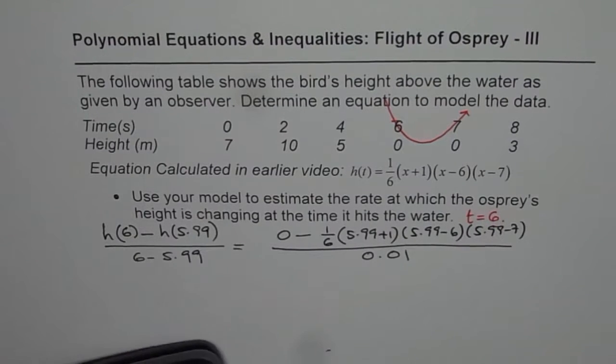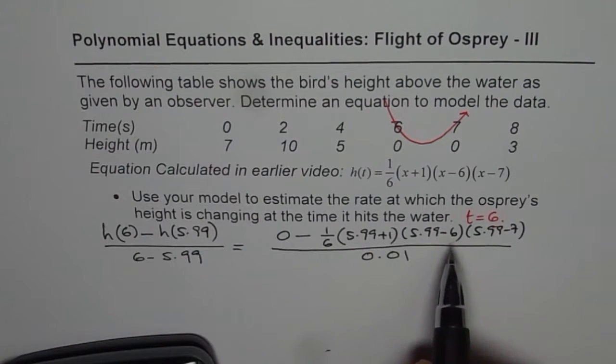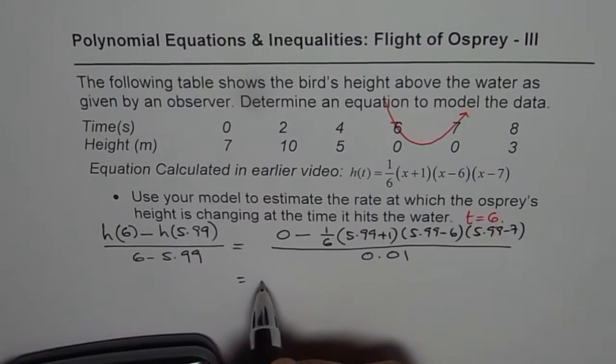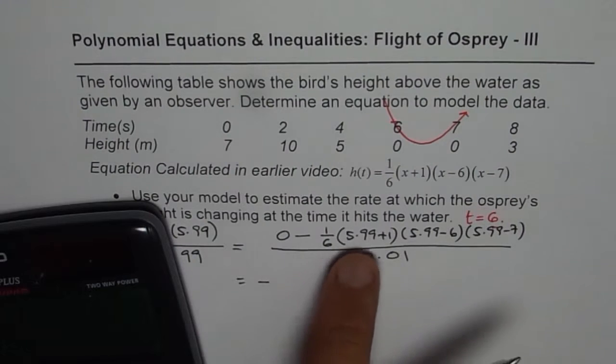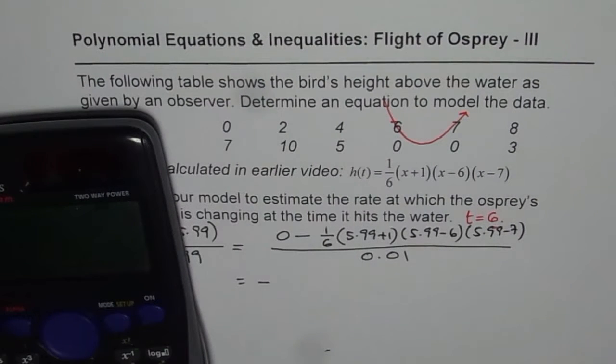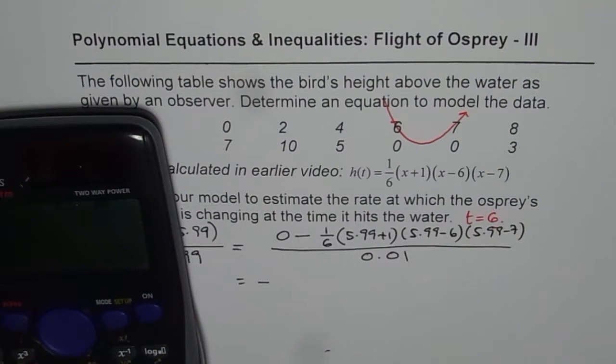So we can use the calculator. Of course, the answer is negative, right? So we can write down negative and calculate the value. It is 1/6 of all this. So let me do within brackets: (5.99 + 1), (5.99 - 6), (5.99 - 7), equals,